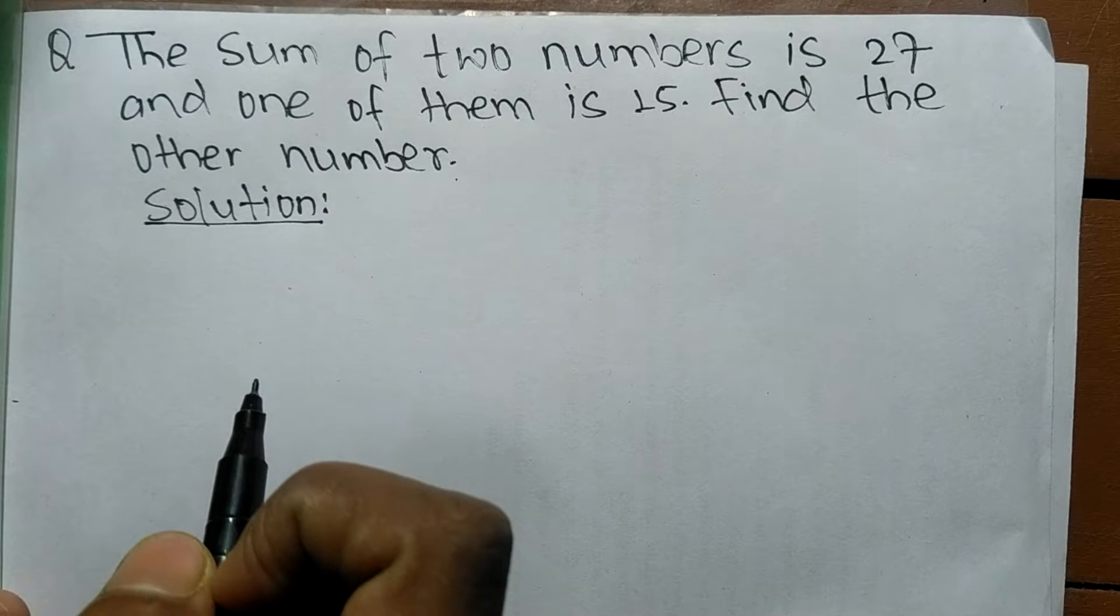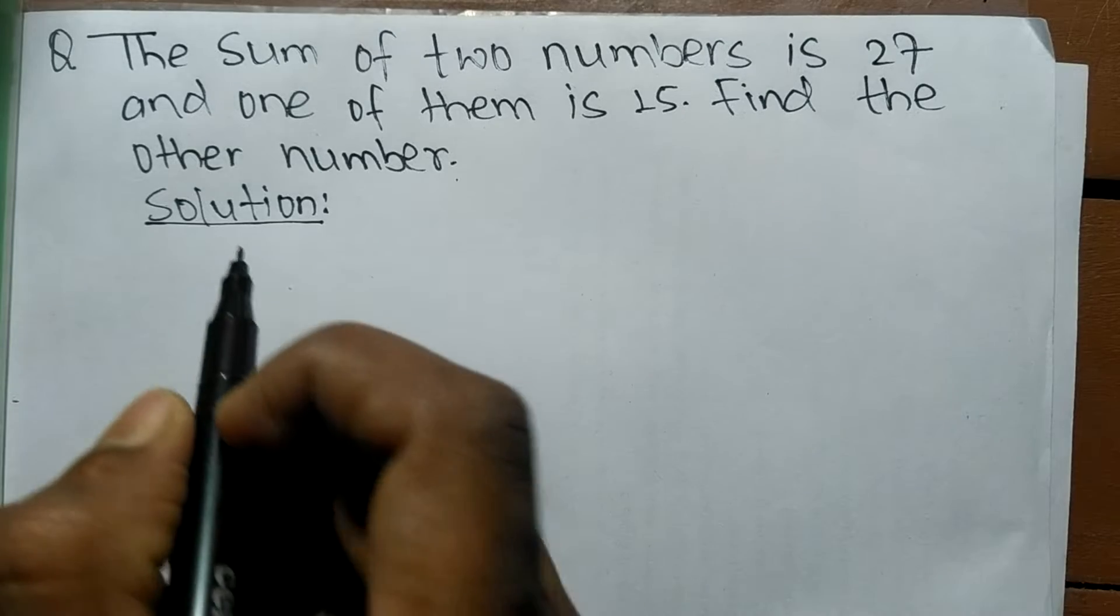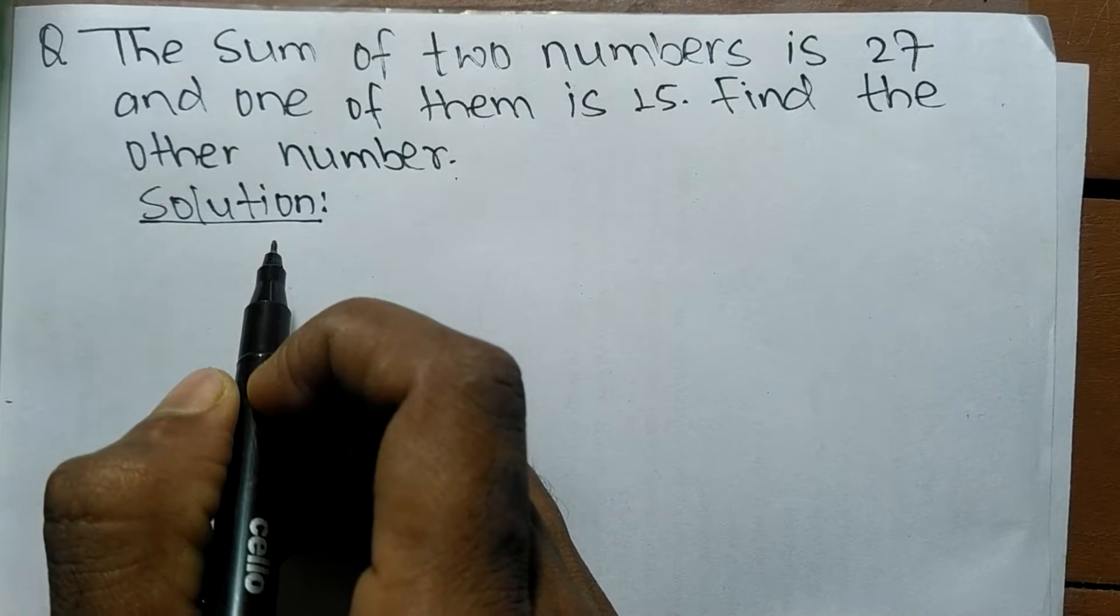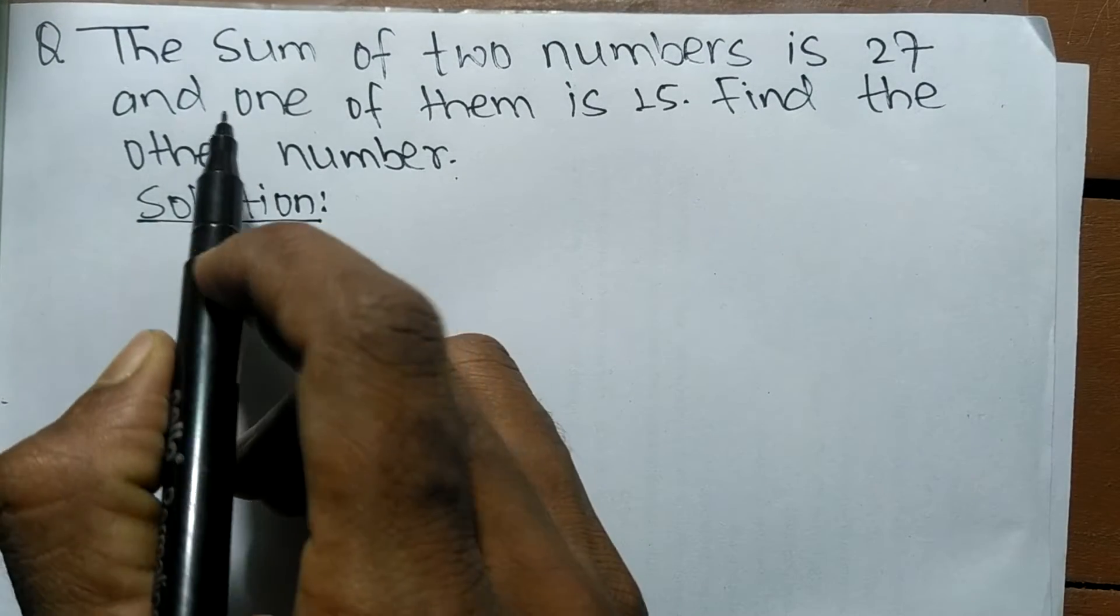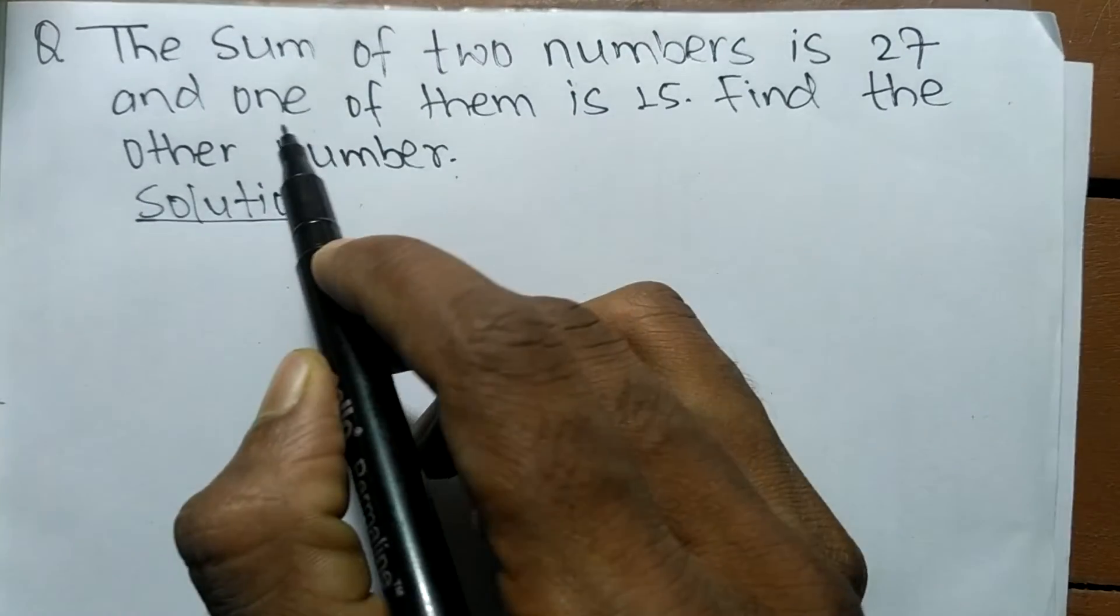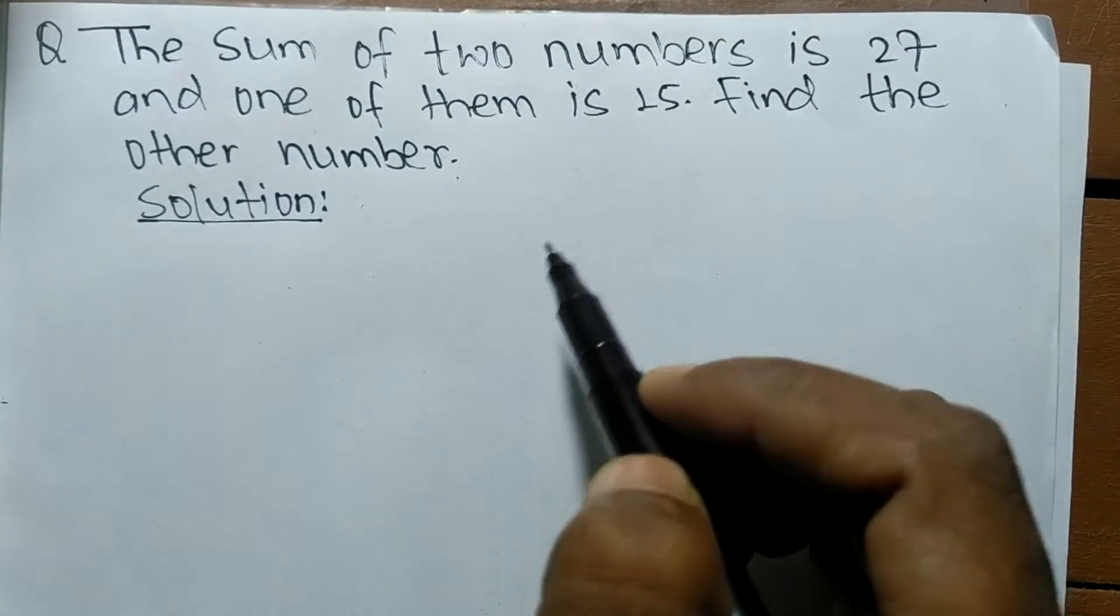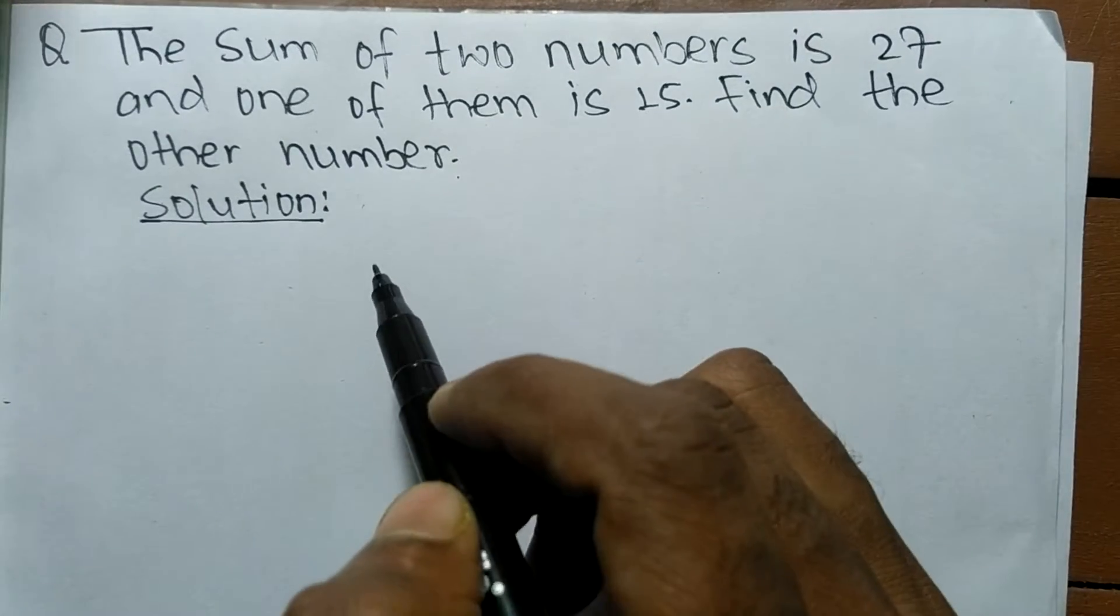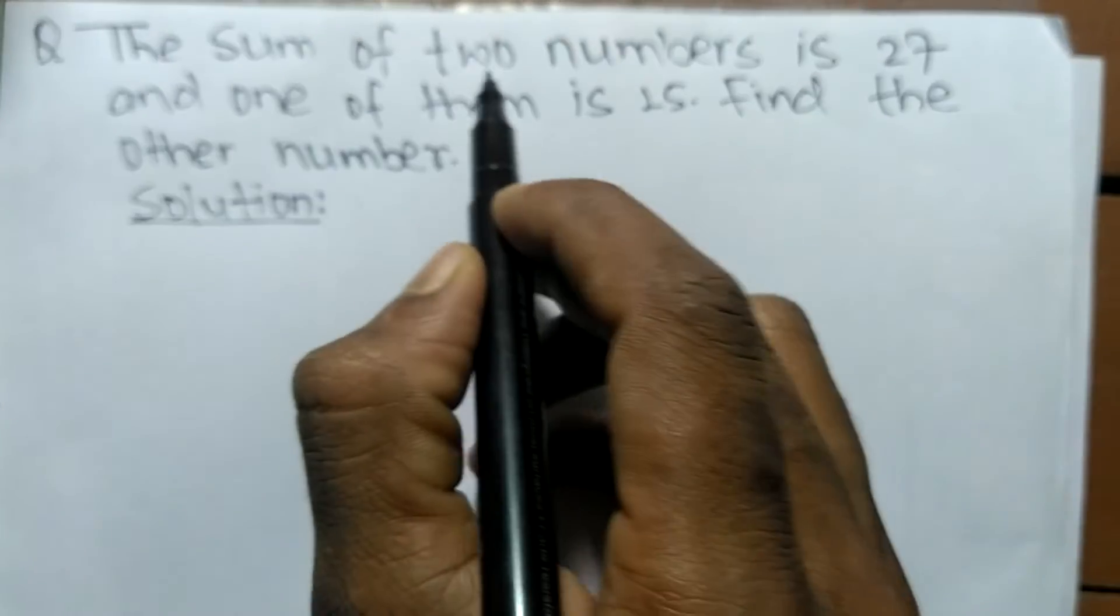Today in this video we are going to solve an algebra problem. The question is: the sum of two numbers is 27 and one of them is 15. Find the other number.